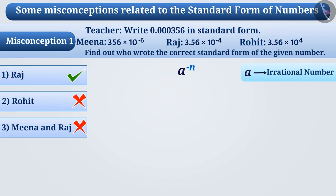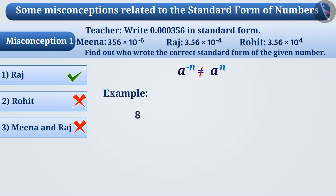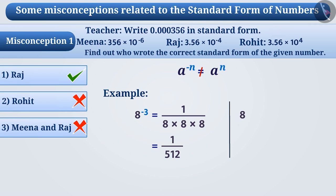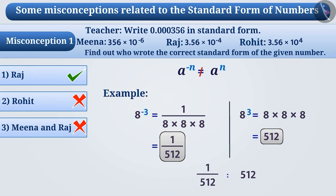Note that a^(−n) and a^n are not equal. For example, 8⁻³ equals 1/(8 × 8 × 8), which equals 1/512. Whereas 8³ equals 8 × 8 × 8, which equals 512. The results are not the same in both cases. Therefore, a^(−n) and a^n are not equal.